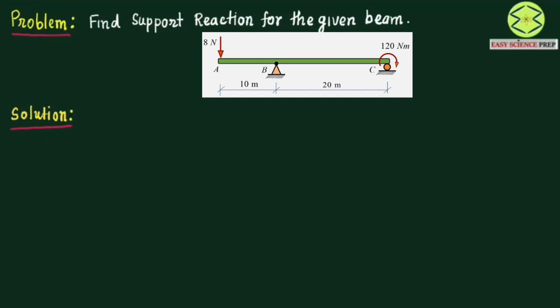We would like to solve a problem based on finding the support reactions for the given beam ABC. This beam has a hinge support at point B, a point load of 8 Newton acting at point A, and a moment of 120 Newton meter acting at point C.